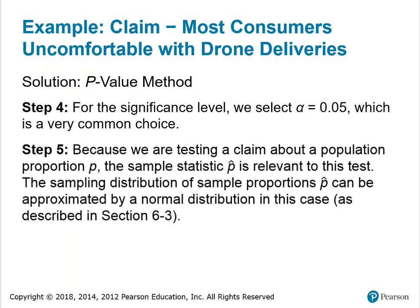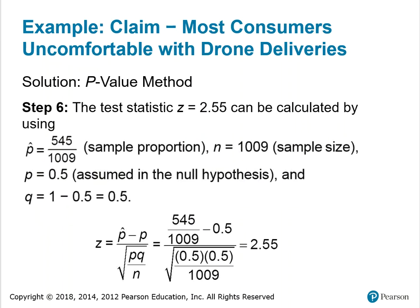For the significance level, we select alpha 0.05, which is a very common choice. Step 5: because we are testing a claim about a population proportion P, the sample statistic P-hat is relevant to this test. The sampling distribution of sample proportions P-hat can be approximated by a normal distribution in this case. The test statistic Z is equal to 2.55, calculated using P-hat of 545 over 1009, N of 1009, P of 0.5, and Q of 0.5. Plugging those values into the formula gives Z equals 2.55.